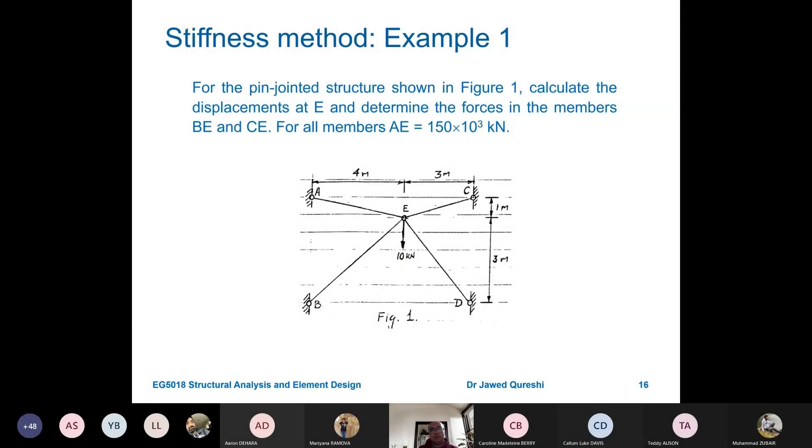This is a pin-jointed framework. We have to work out displacements at E and determine the forces in the members BE and CE. The distances are given. For all members, AE is given. So this is a pin-jointed structure, which means that it will only have axial forces, tension or compression. It will not have any moment and shear forces. A is the area and E is Young's modulus.